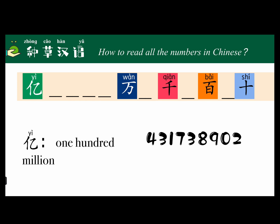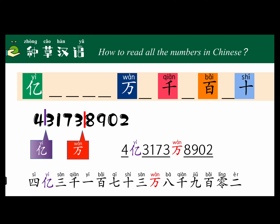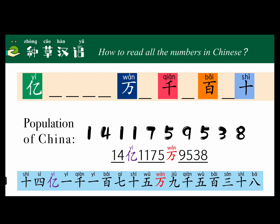For example, 431,738,902 — we are still counting from back to front, four digits as a unit, drawing commas. The first comma is 万 (wàn) and the second comma is 亿 (yì). So we read it as 四亿三千一百七十三万八千九百零二. The population of China in 2023 is 1,409,750,000, which in Chinese is 十四亿一千一百七十五万九千五百三十八 (shí sì yì...).